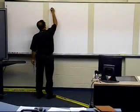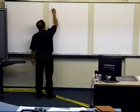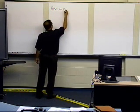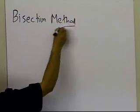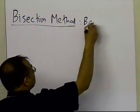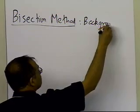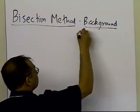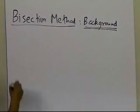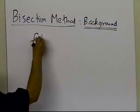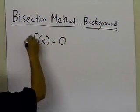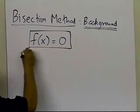In this segment, we're going to talk about the bisection method. I'm going to give you some background about the bisection method. The bisection method is basically based on trying to find out the root of the equation, which is of this form.